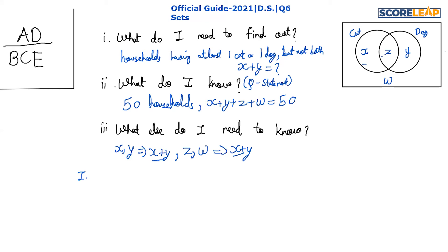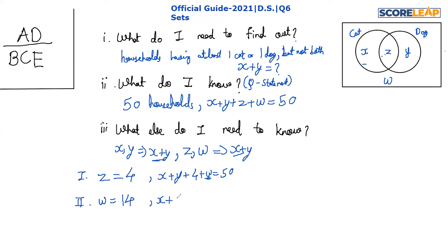Statement 1 says the number of households having at least one cat and at least one dog is four, so z equals 4. From this: x plus y plus 4 plus w equals 50. But we still don't know w, so we cannot figure out x plus y. Statement 1 alone is not sufficient.